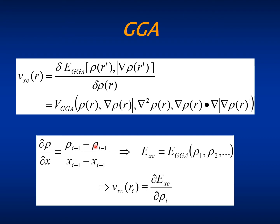Once you have calculated the gradient using the density at the grid points, you have the expression for the exchange-correlation energy as an integral over the grid points, and therefore it is a function of the density at the different points. That means the exchange-correlation energy is a normal function of the density at all points rather than a functional, and the exchange-correlation potential can be calculated as a normal partial derivative of the energy with respect to each particular density at each point.